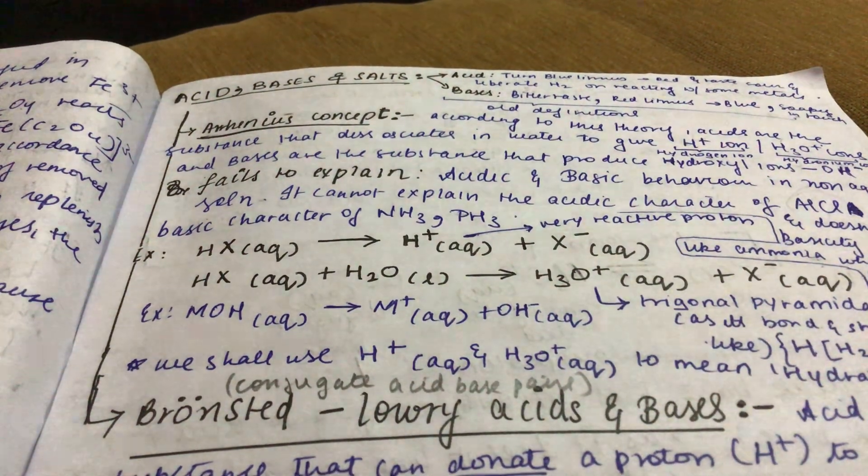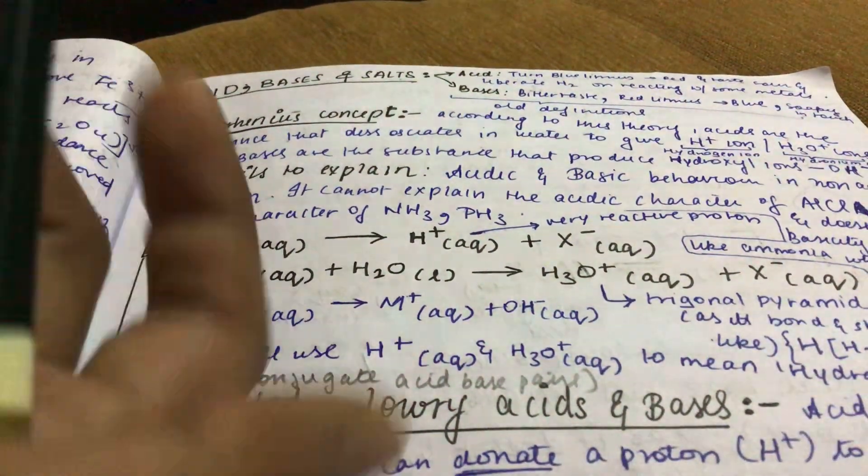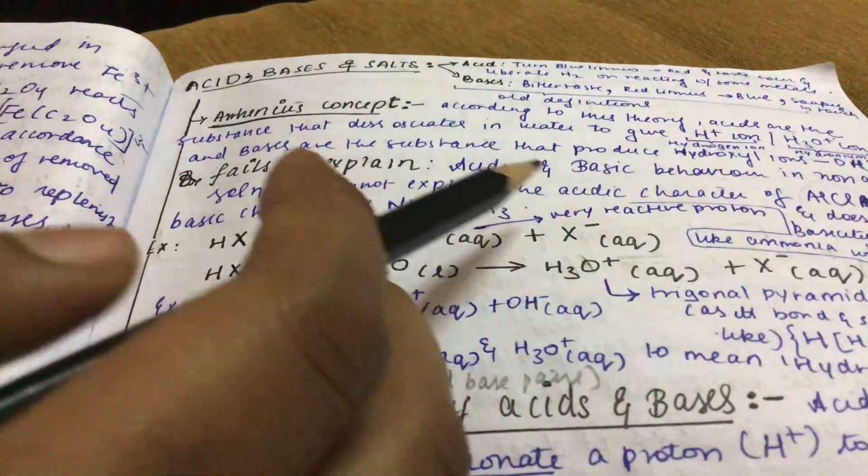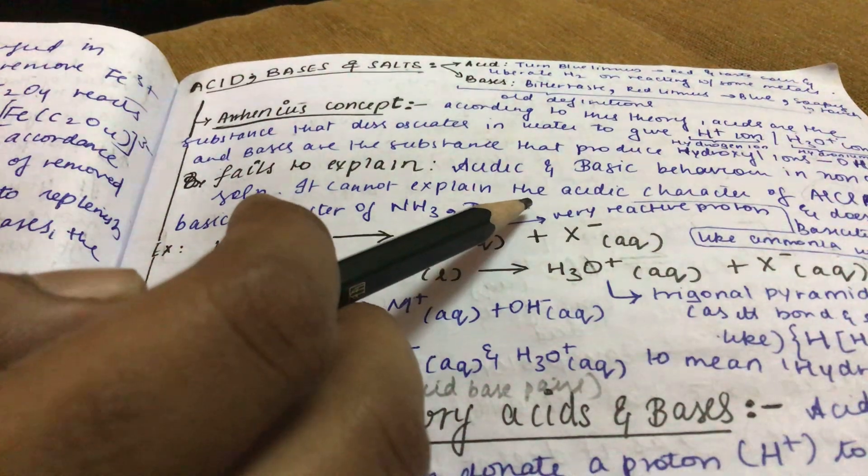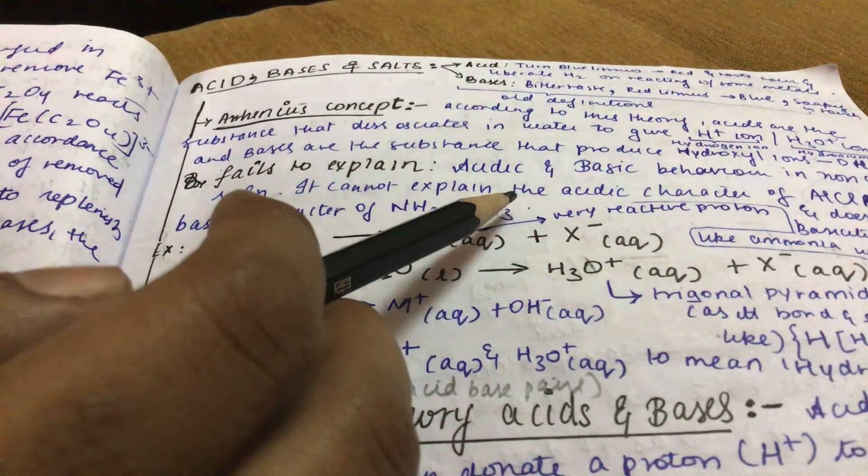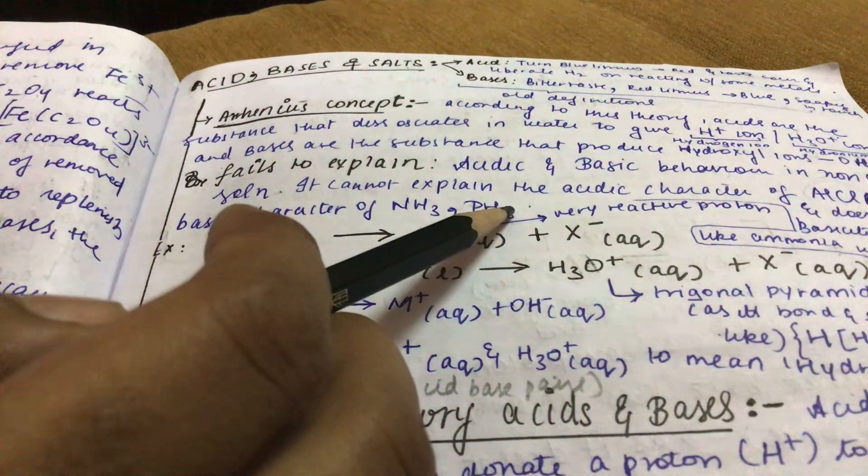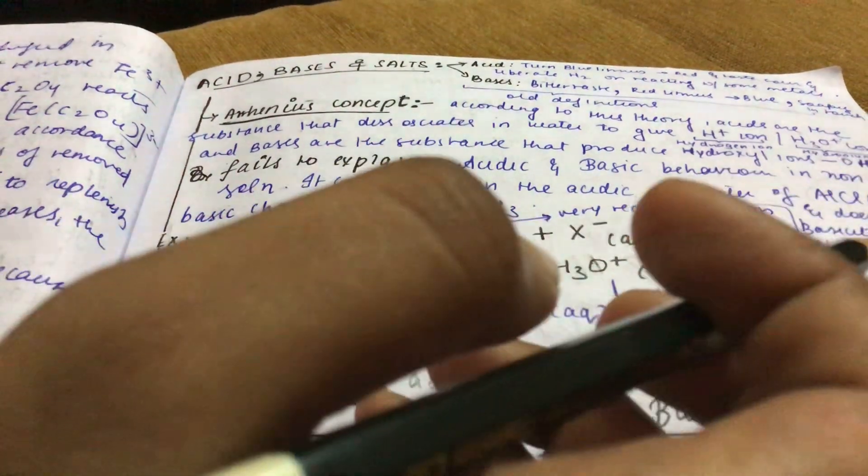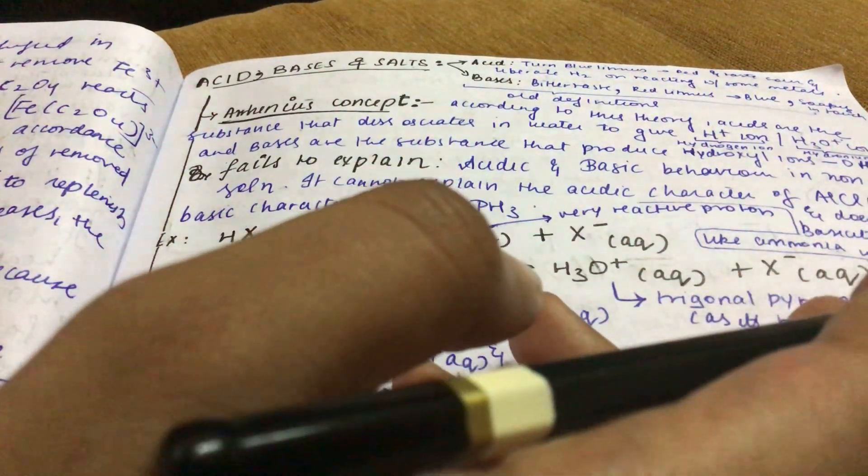AlCl3 and NH3, PH3 cannot be explained. They don't have OH minus ion, so it doesn't explain basicity of substances like ammonia which don't possess hydroxyl group.